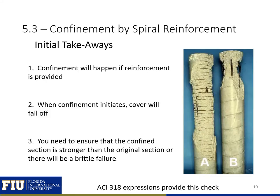Before moving on, some key takeaways: First, confinement will happen if reinforcement is provided — whether we account for it in our analysis or design, it's going to occur in the actual column. Second, when confinement initiates, the cover is going to fall off, so the cover must spall before the concrete core starts to see confinement effects. Third, you need to ensure that the confined section is stronger than the original section, or there will be a brittle failure when the concrete cover is lost — and the ACI 318 expression from the previous slide provides this check.